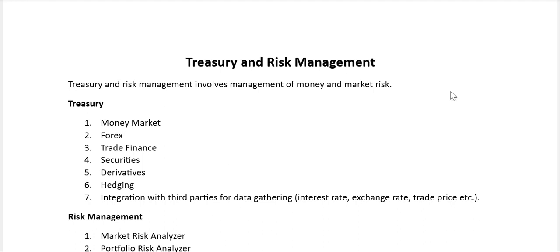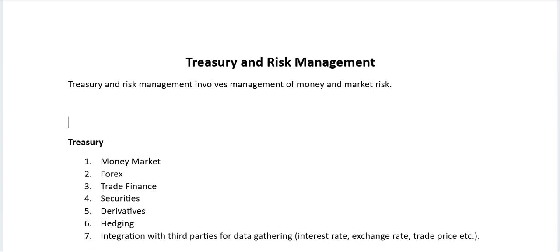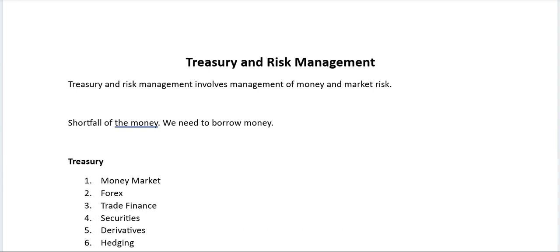After analyzing cash and liquidity of the entity, we start treasury and risk management. For example, with our cash position the accountant may identify a shortfall of money. That shortfall will trigger the treasury and risk management department to borrow money. In another case, if we have excess money, it will trigger the investment department to make some investments.